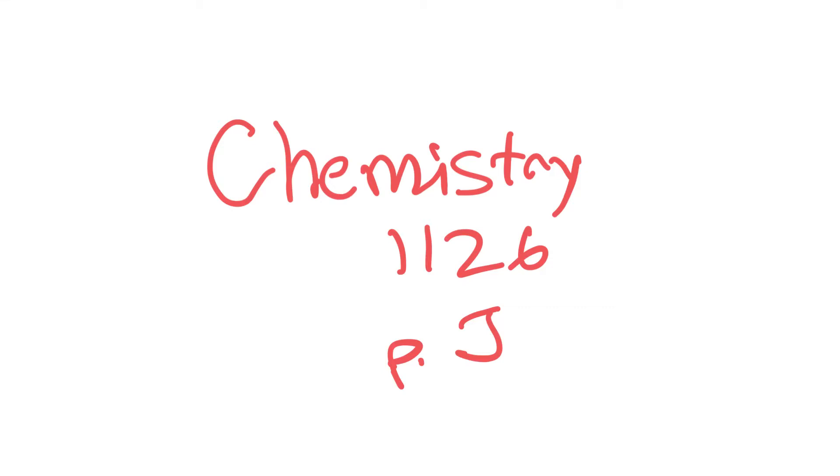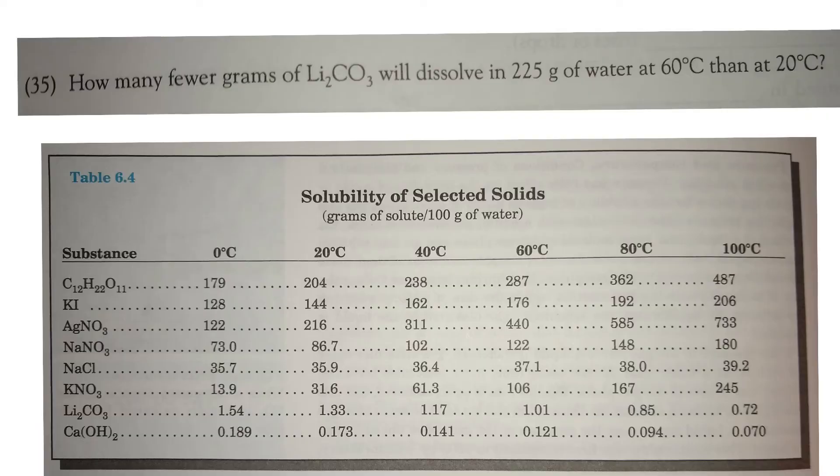This video lesson is for page J1126. Table 6.4 shows that the amount of a solute—that would be the chemicals over here on the left—varies depending on the temperature. So let's take, for instance, potassium iodide here, and if you follow the table across, you'll see that as the temperature goes up...